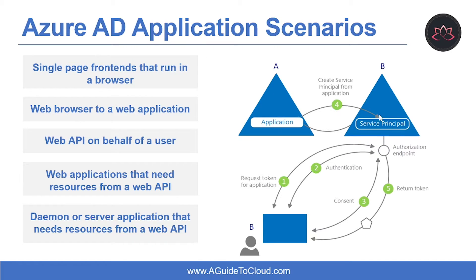Let's look at the workflow. First, a user tries to sign in with the app. Second, Azure AD gets and verifies user credentials. Third, Azure AD prompts the user to consent for the app to gain access to the tenant. Fourth, Azure AD uses the application object as a blueprint for creating the service principal. And fifth, the user receives the requested token.